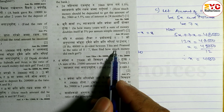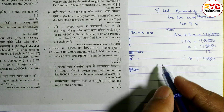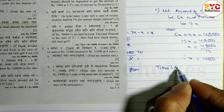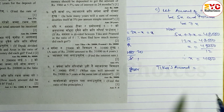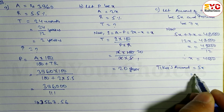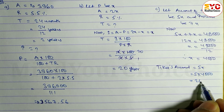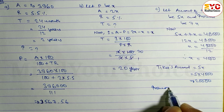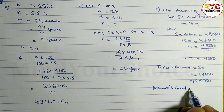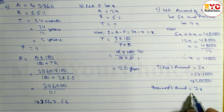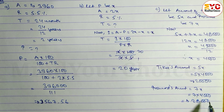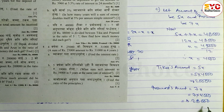Question le yahi bhaneko cha — how much did each get? Amount of Tika = 5X = 5 × 4,000 = 20,000 rupees. Pramod ko amount = 7X = 7 × 4,000 = 28,000 rupees. So Tika le 20,000 paisa payo, Pramod le 28,000 paisa payo.